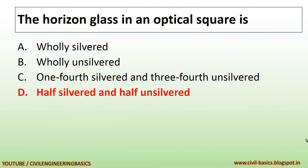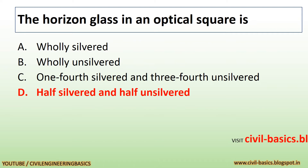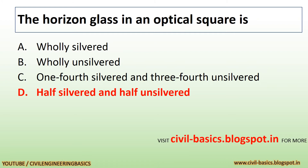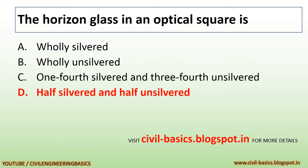The horizon glass in an optical square is half silvered and half unsilvered.